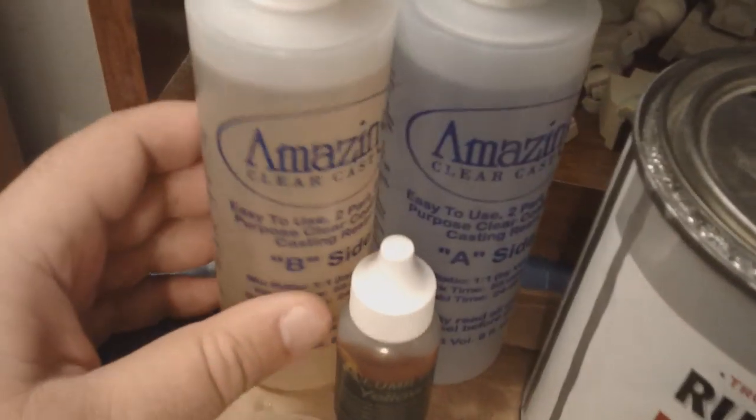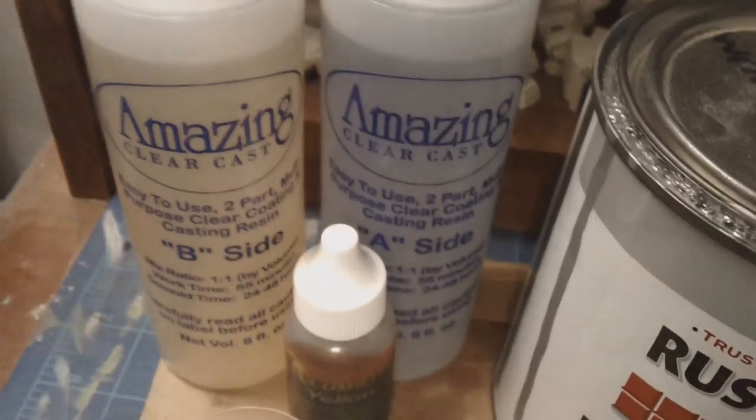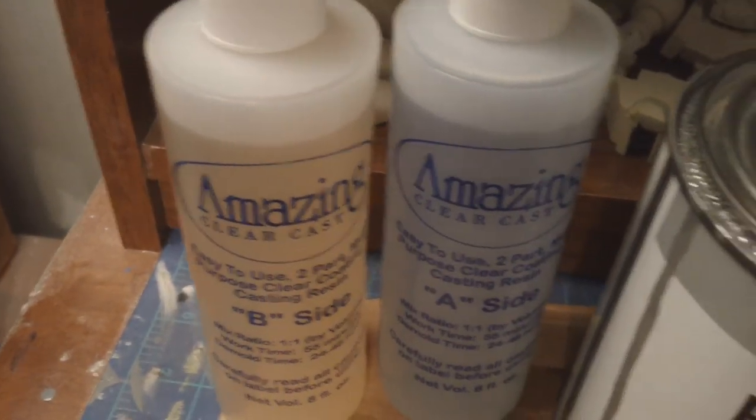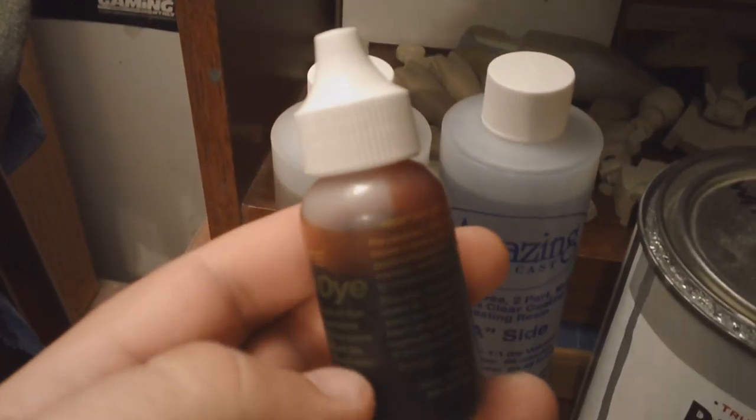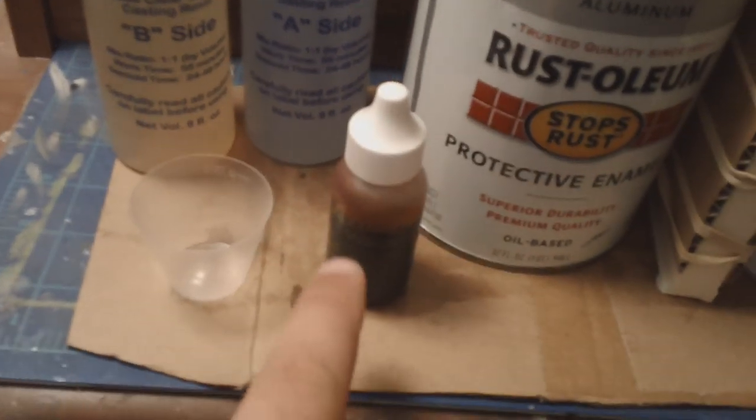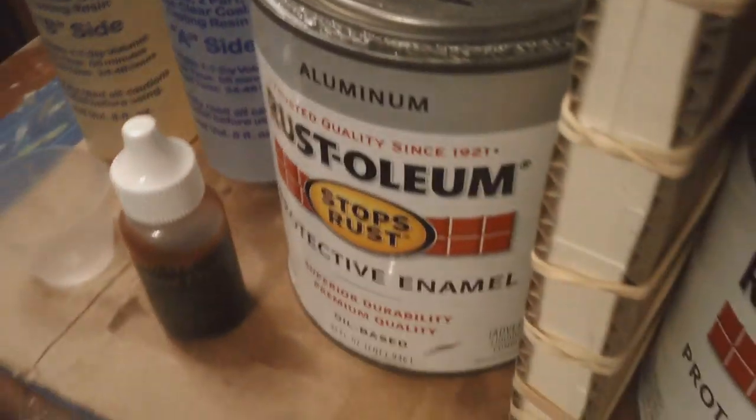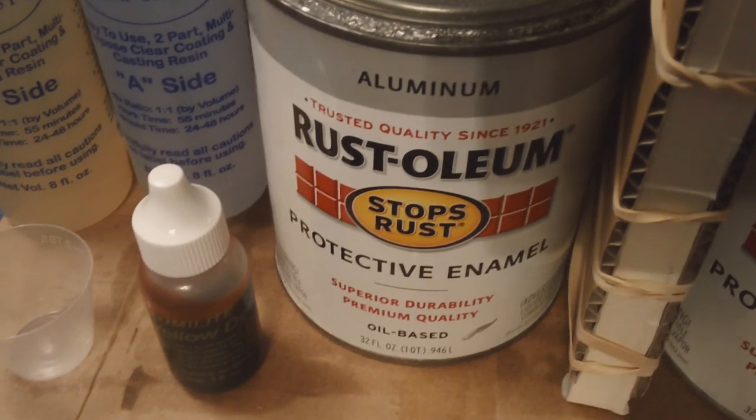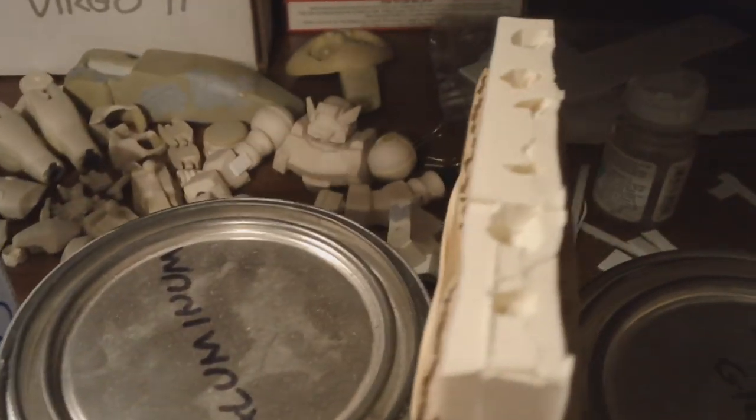Anyway, this is the resin we're going to be using. This is Alumilite's Amazing Clear Cast Resin. And you could just use plain clear resin and make clear fake parts. But Alumilite also sells resin dye. And they sell all kinds of different colors. Red, yellow, blue, green, black. And the dye itself is translucent. So it will work with either clear or solid resin. So whenever you see, like on the internet, a colored resin kit for sale, that's how they do it. With resin dyes like this. So all that's left to do now is mix up the resin and pour it into the mold.